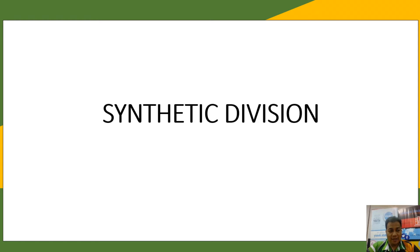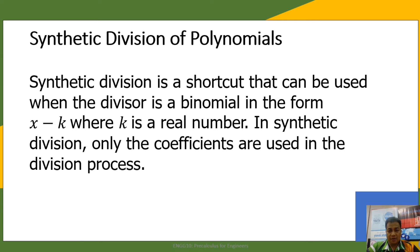Finally, we are down to the last method of dividing polynomials, and this method is called synthetic division. When do we use synthetic division? This is a shortcut method, but it is only useful when the divisor is a binomial of first degree, meaning the exponent of the variable is only limited to one, so our divisor should be of the form x minus k, where k is a real number.